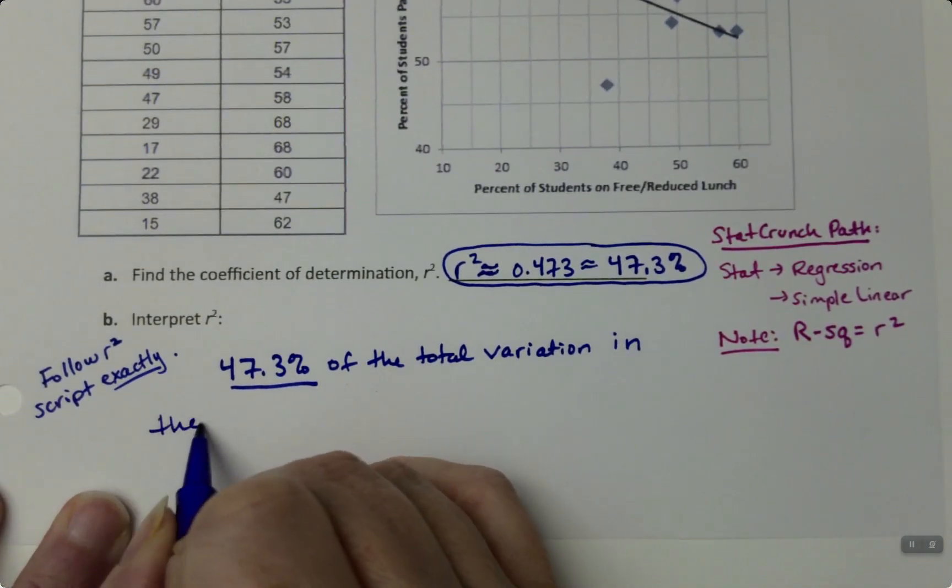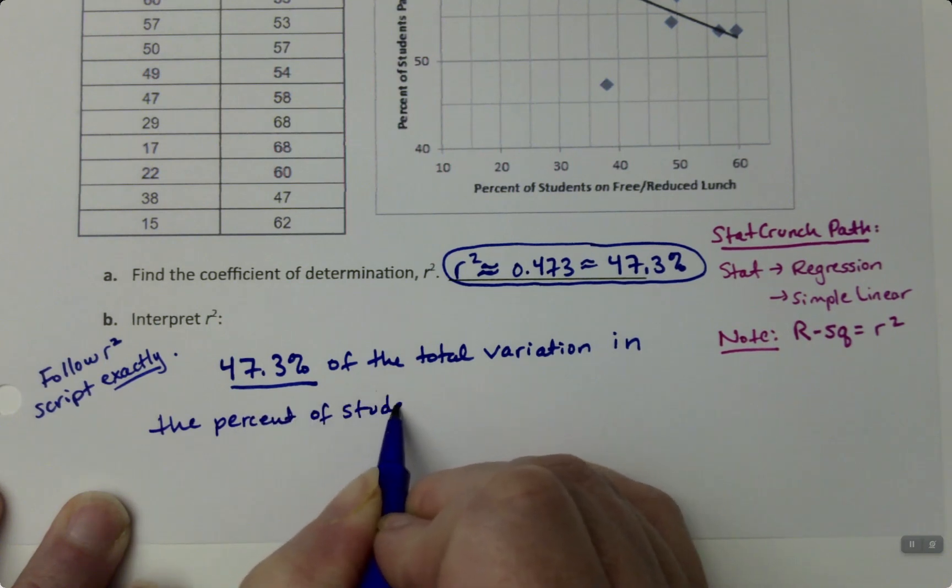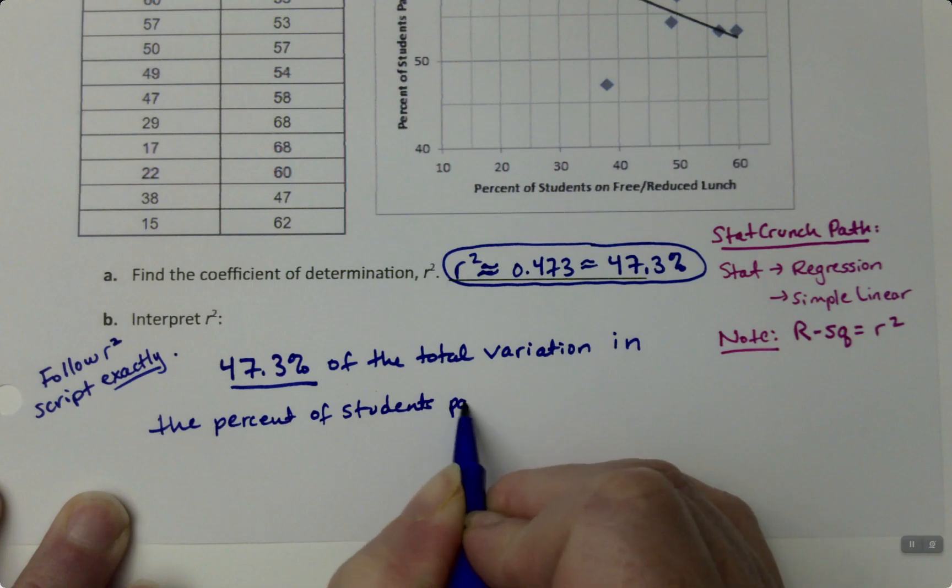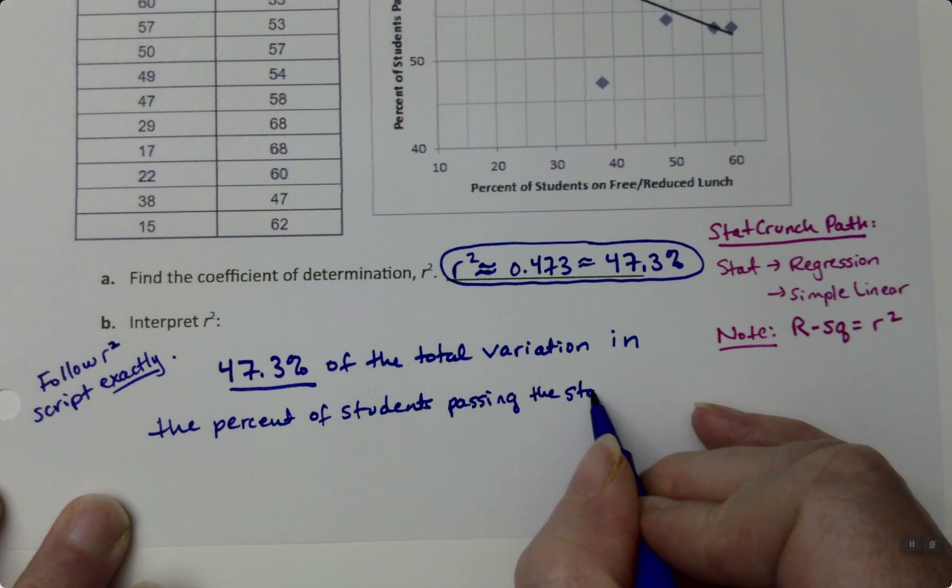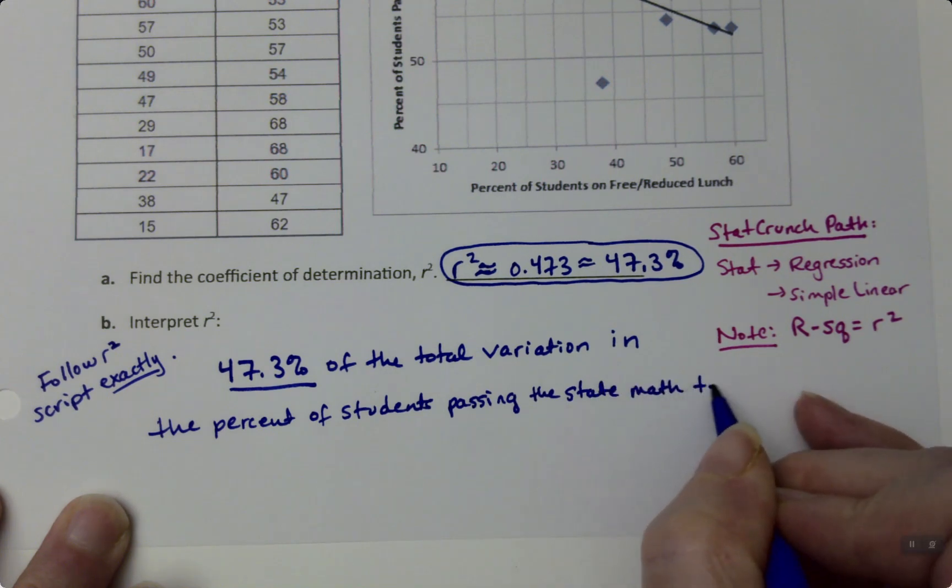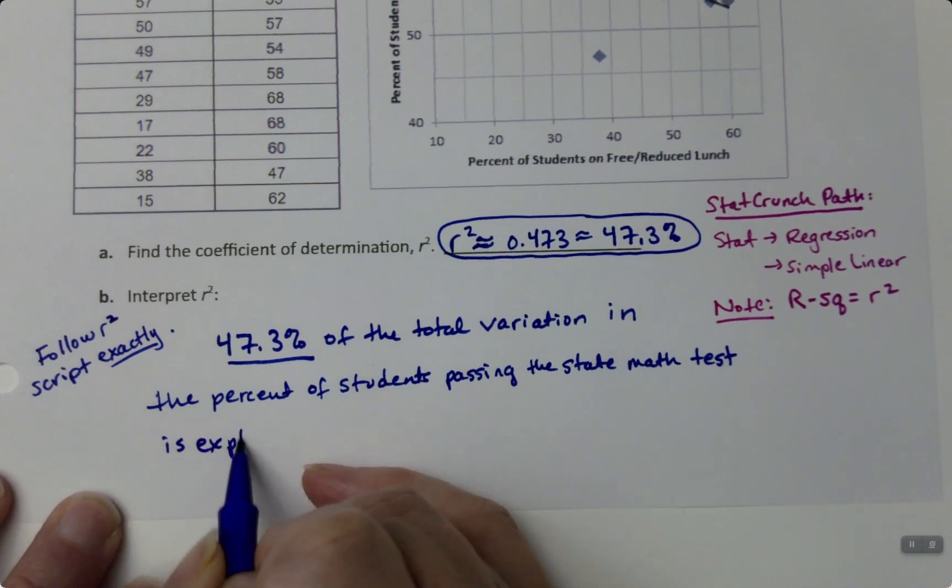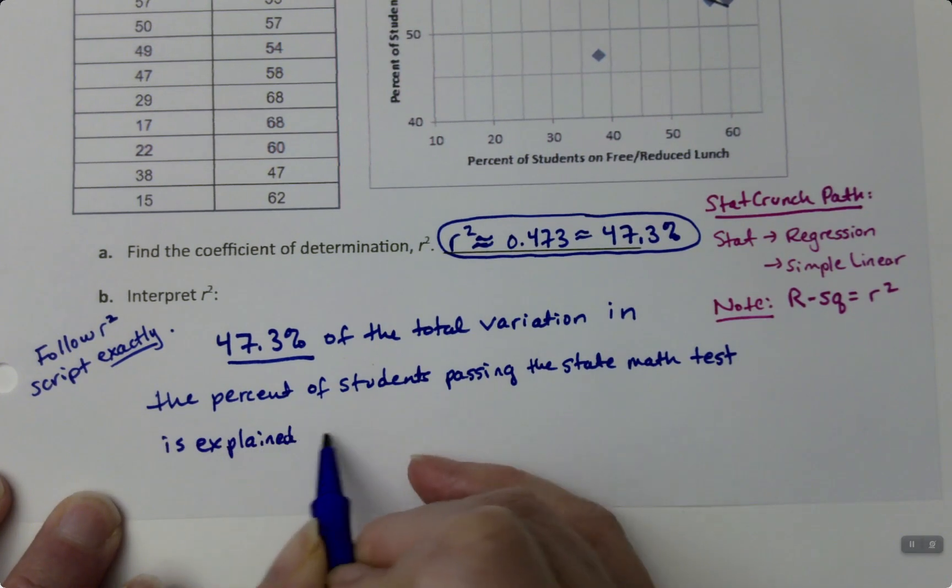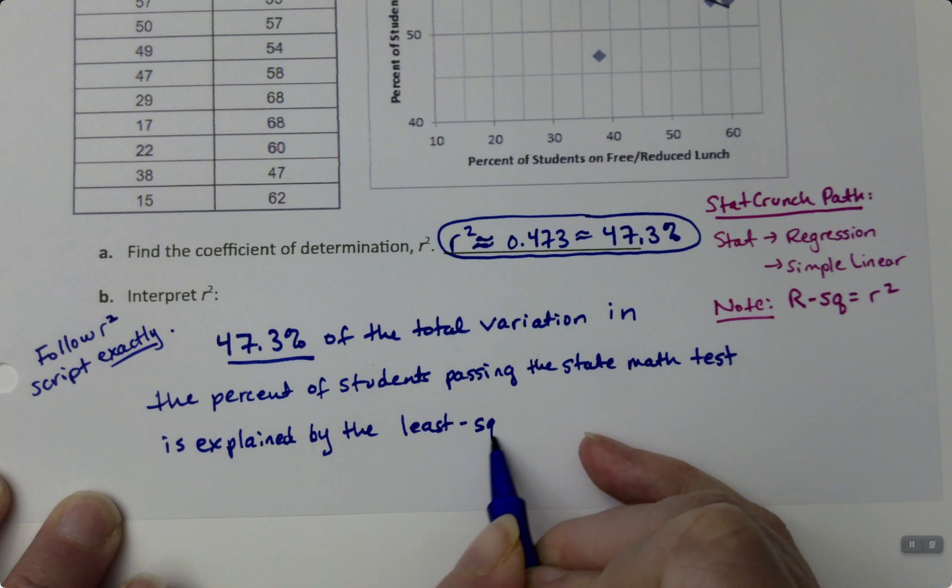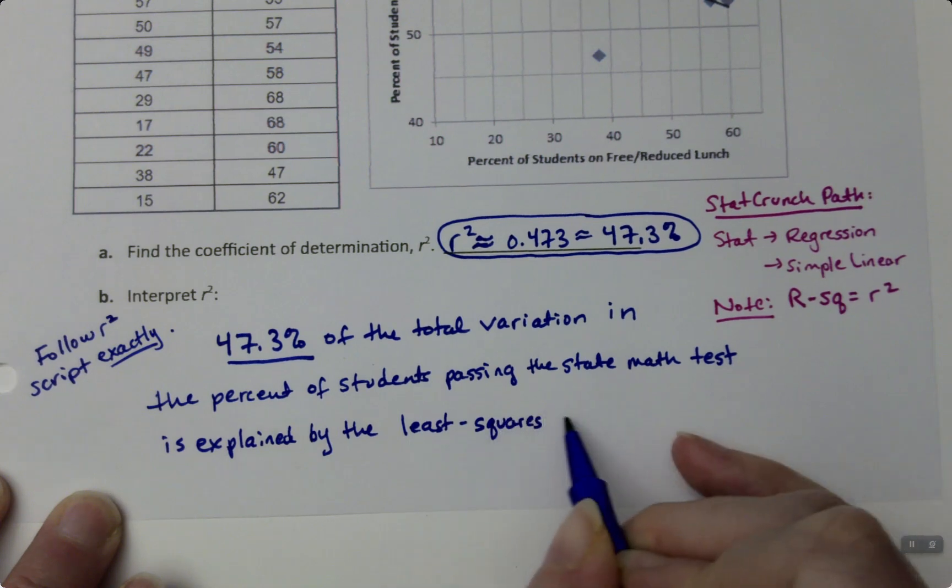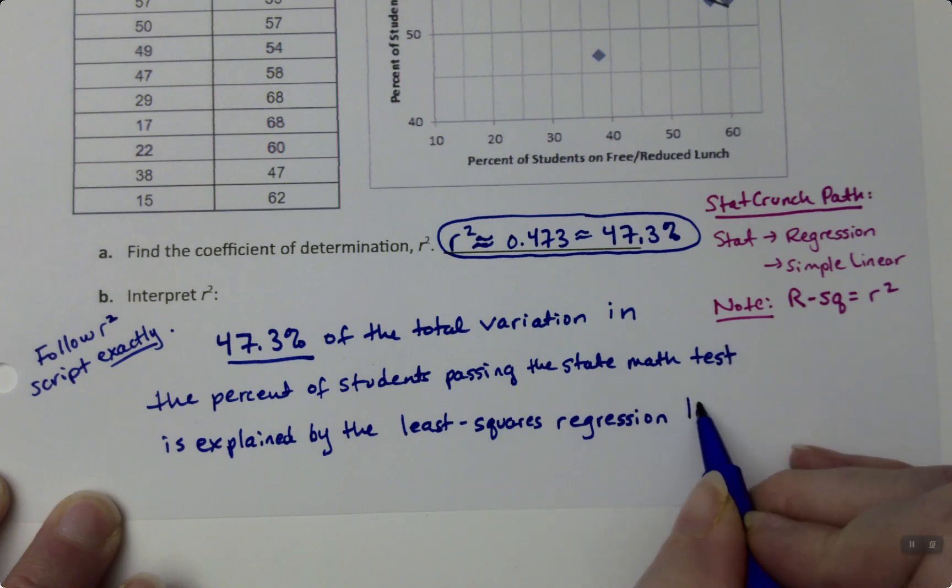...in the percent of students passing the state math exam is explained by the least squares regression model, or regression line either way.